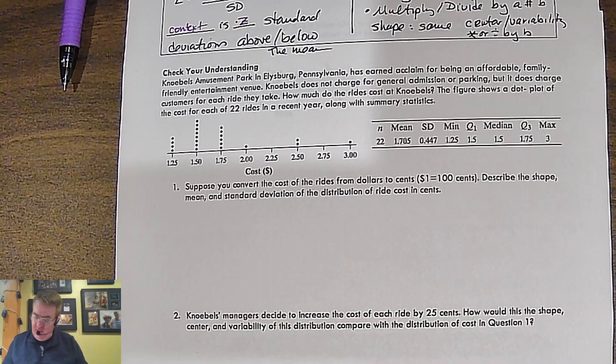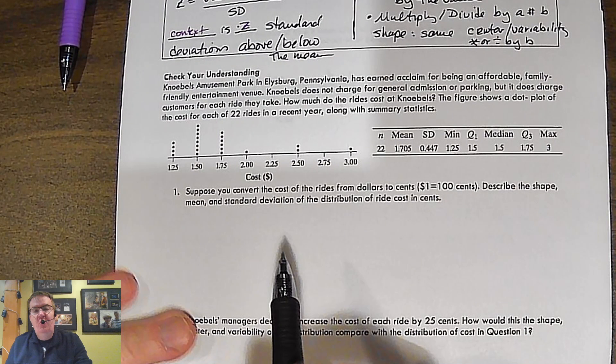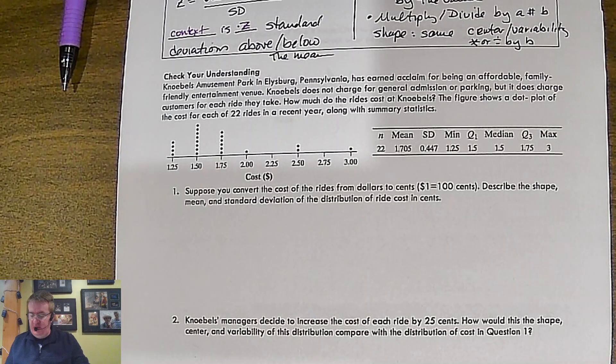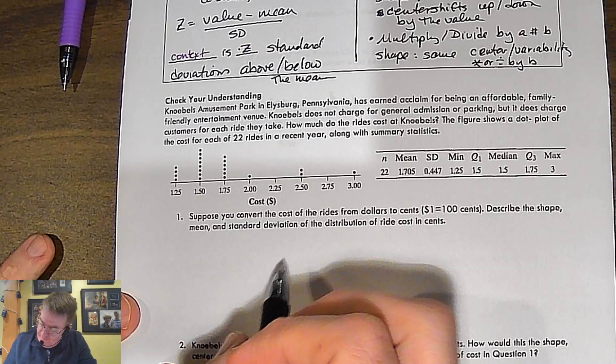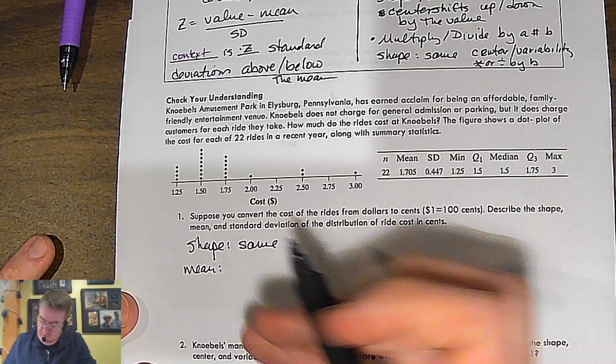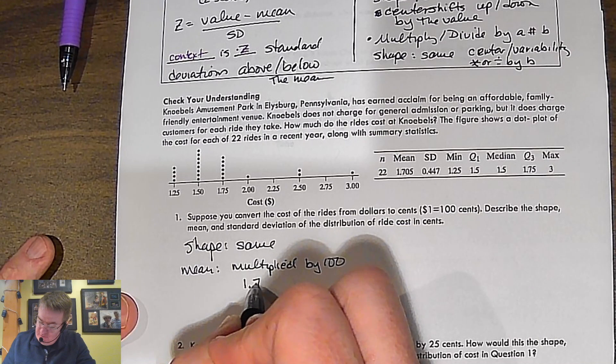So suppose you convert the cost of the rides from dollars to cents. Describe the shape, mean, and standard deviations of the rides costs in cents. Well, okay. So what are we doing? When you're converting things in money, you're asking, am I adding it or am I multiplying it? Well, we're going to have to multiply it by 100. Okay. So if it's multiplying by 100, we're going to fall into this group here. So the shape is going to be the same. Your mean, which was $1.705, is going to be multiplied by 100. Why 100? Because that's what we're multiplying all the prices by. We're changing it from dollars to cents. We're multiplying it by 100. So that means I've got 1.705 times 100. So your answer should be 170.5 cents.